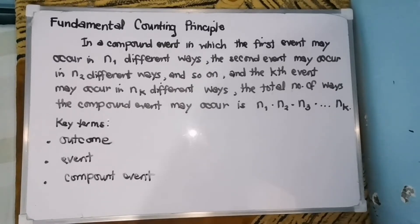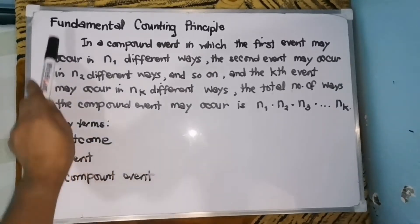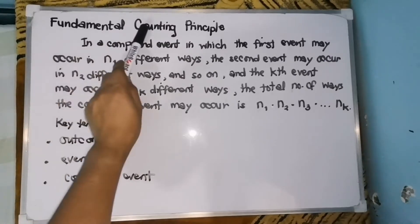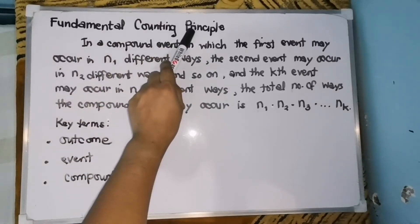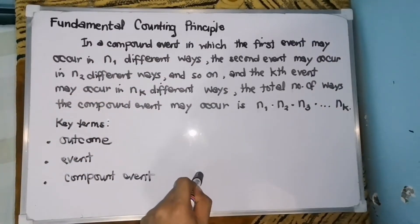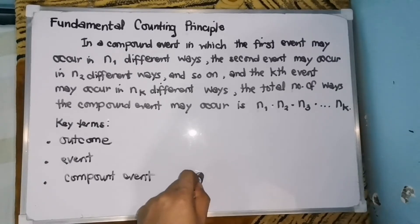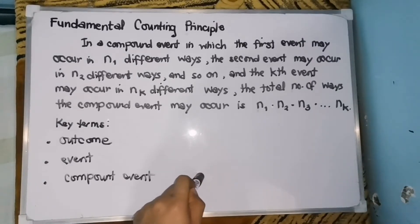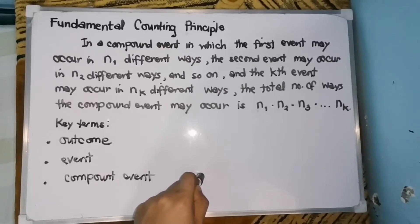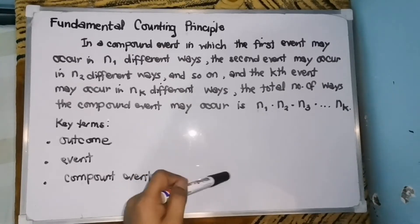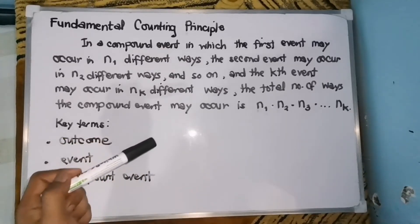For today's lesson, I will be discussing the Fundamental Counting Principle, also known as the Fundamental Counting Techniques or FCT. Counting events will help you find theoretical probabilities in our next chapter.